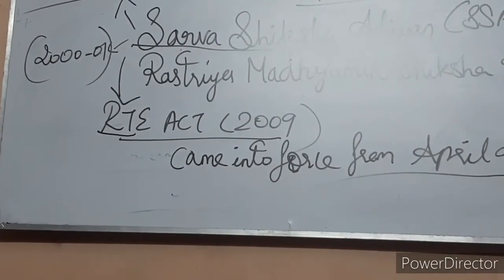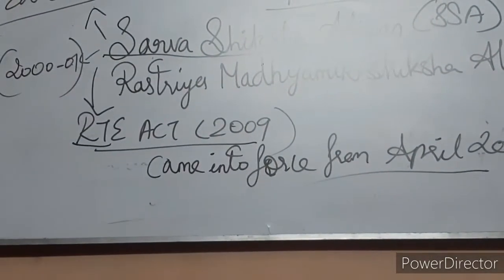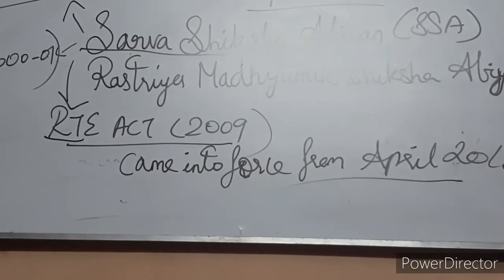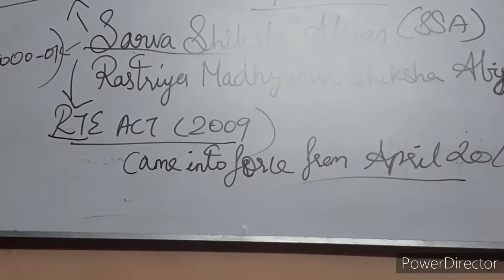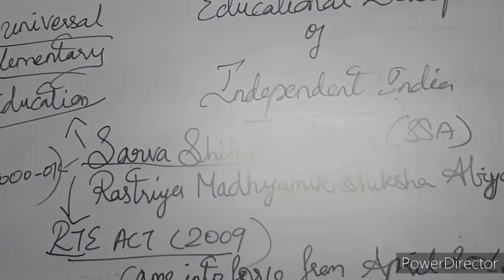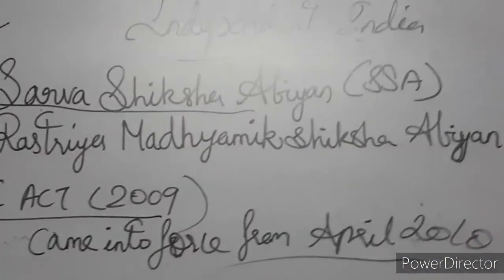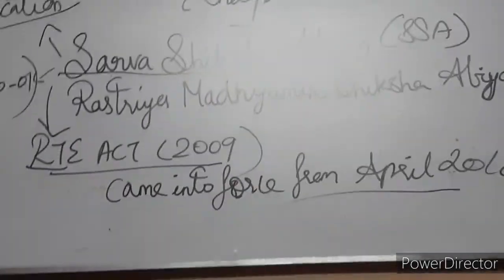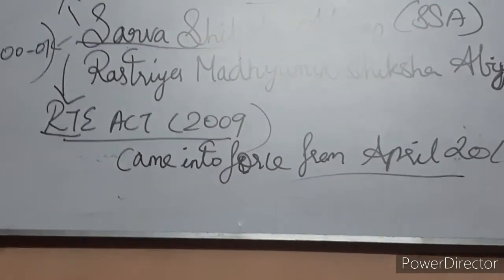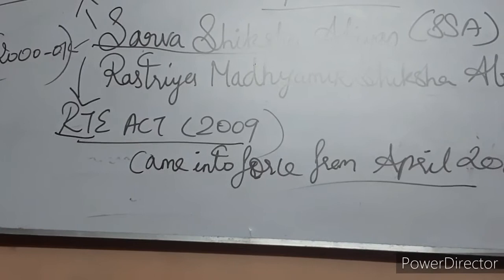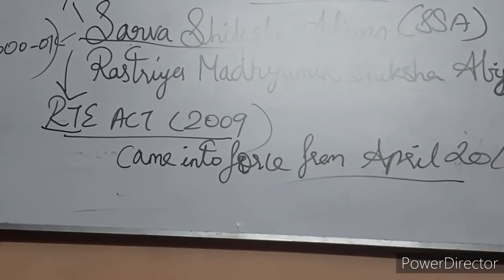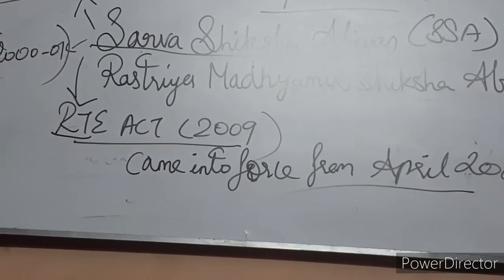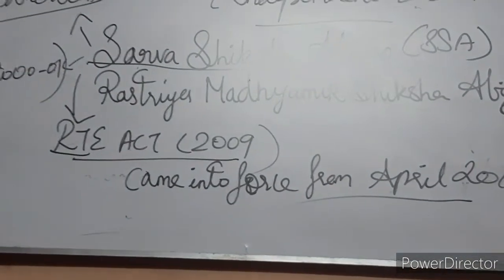Next, the Rashtriya Madhyamik Siksha Abhiyan — shortly known as RMSA — focused on Universalization of Access and Improvement of Quality Education at the secondary stage. Sarva Siksha Abhiyan covered only elementary education, while RMSA was introduced for secondary level education. It was implemented during the 11th Five-Year Plan. The goal of RMSA was to make secondary education qualitative, available, accessible, and affordable to all young people from age 15 to 16 years. Science labs, libraries, in-service training for teachers, computer-aided education, co-curricular activities, and teaching-learning aids were also provided by the Government of India through RMSA.